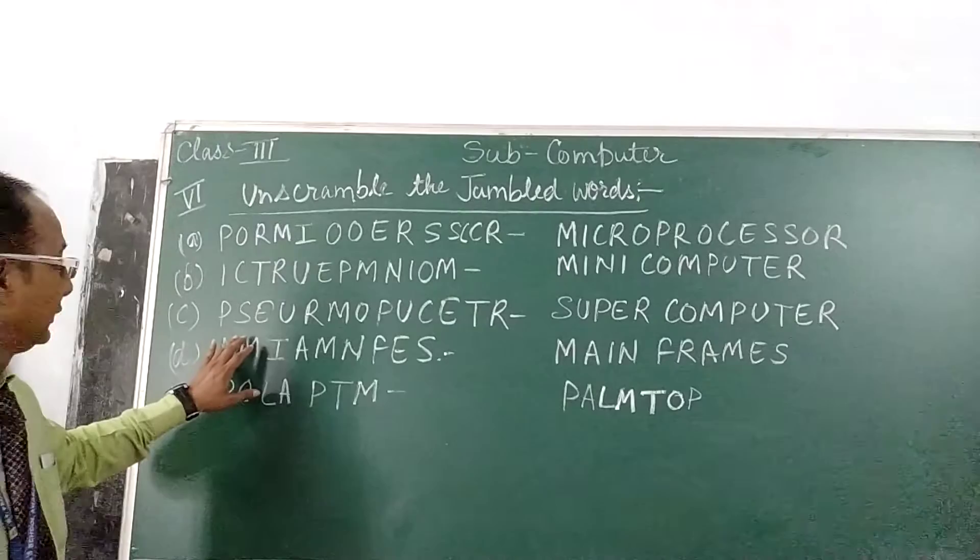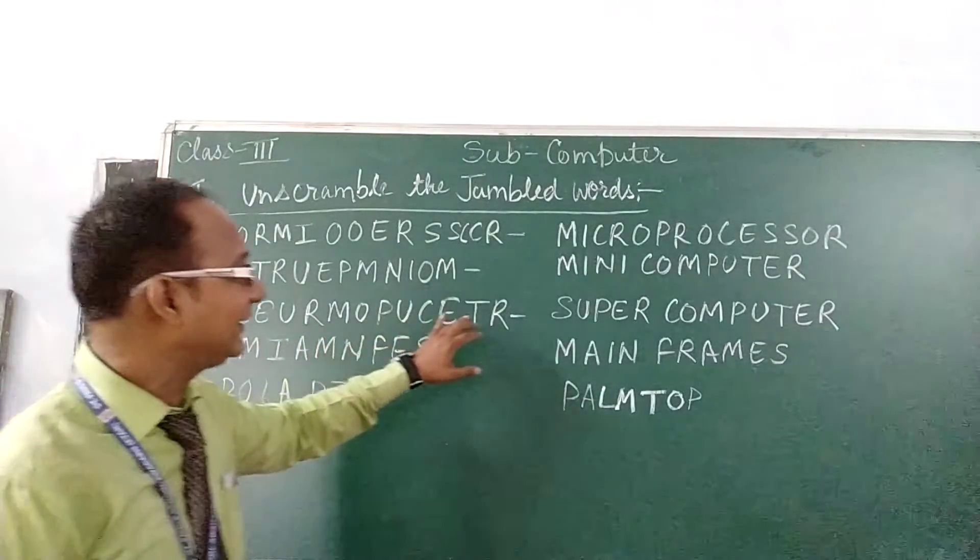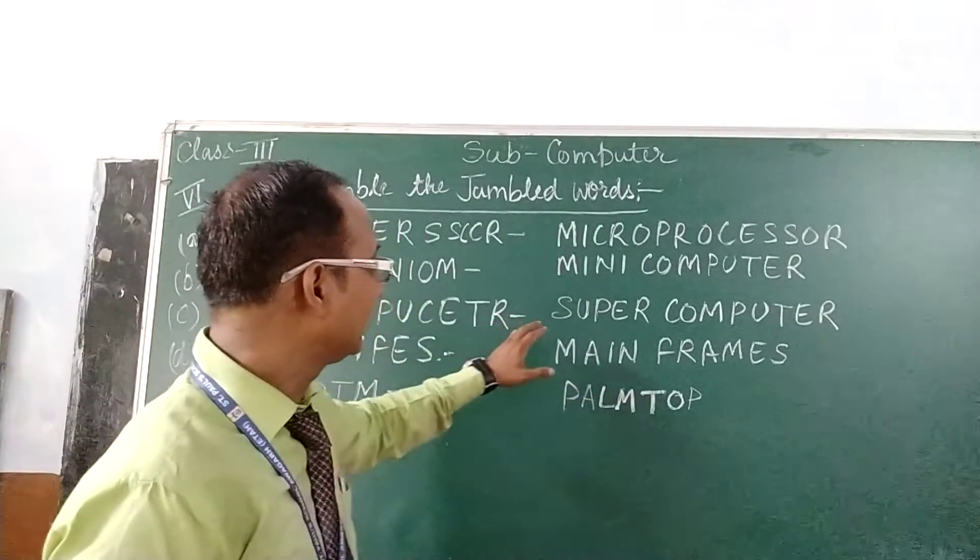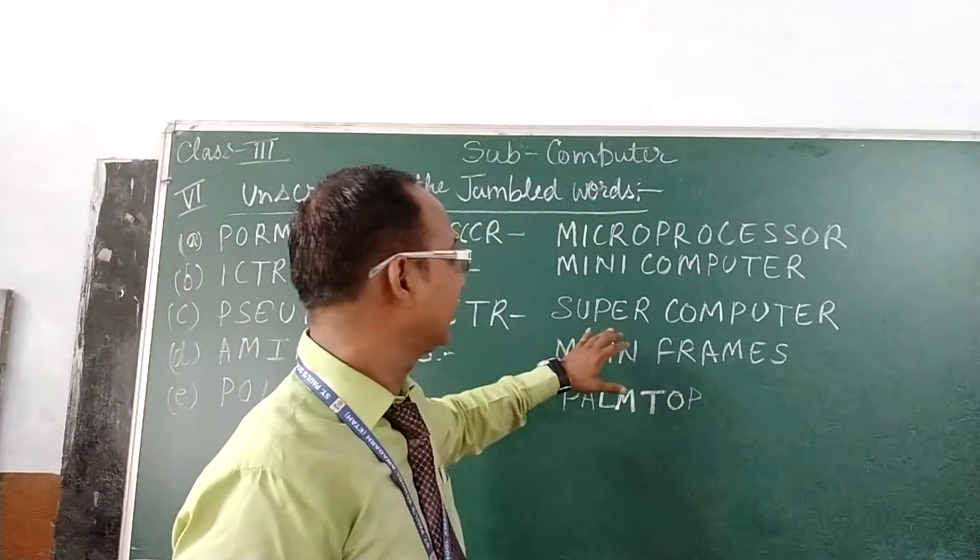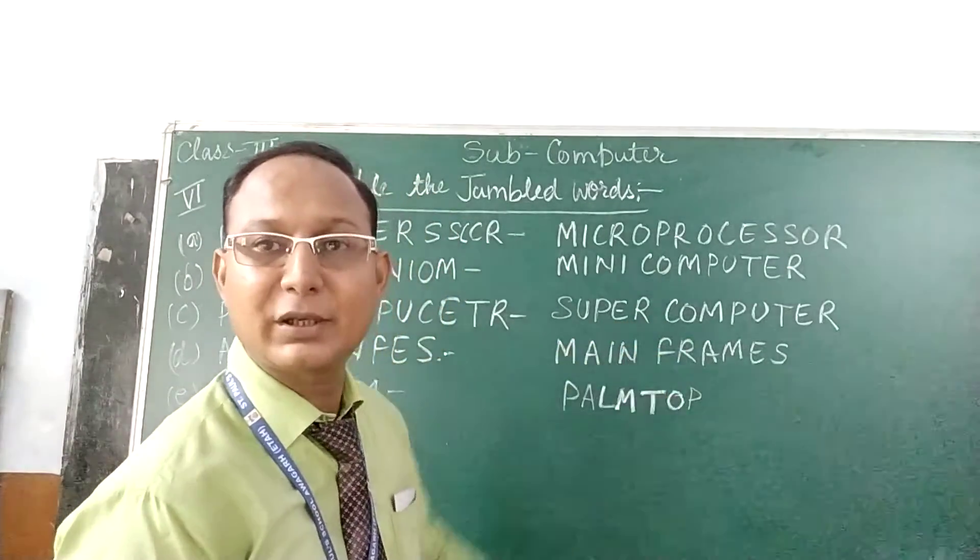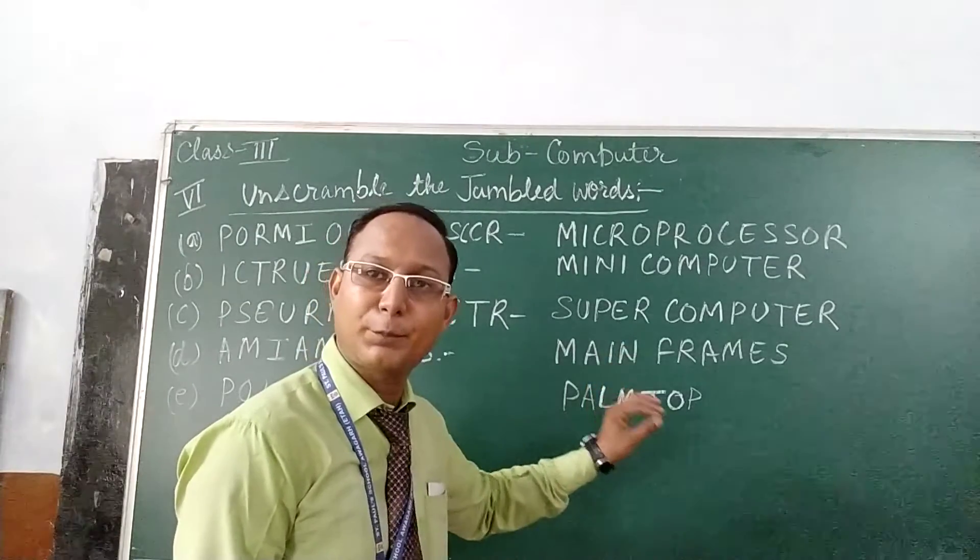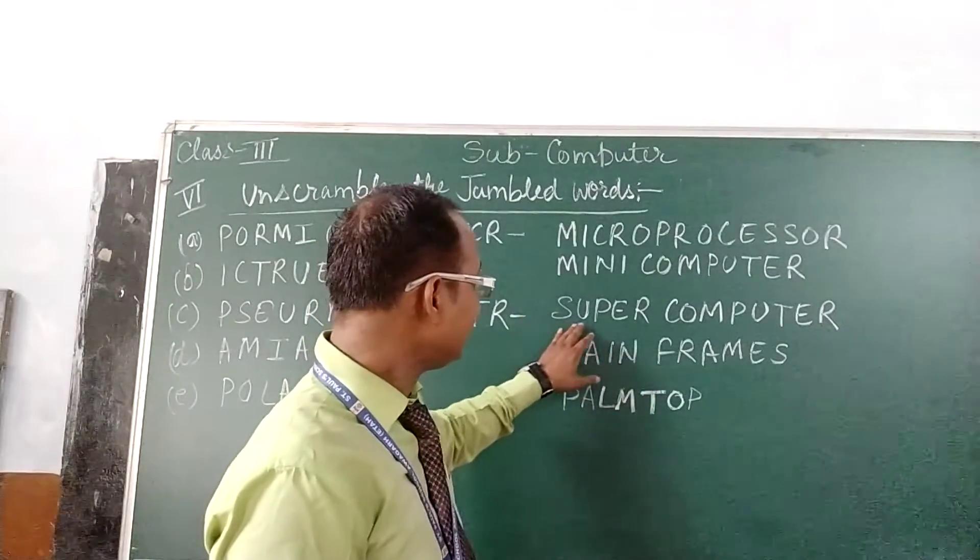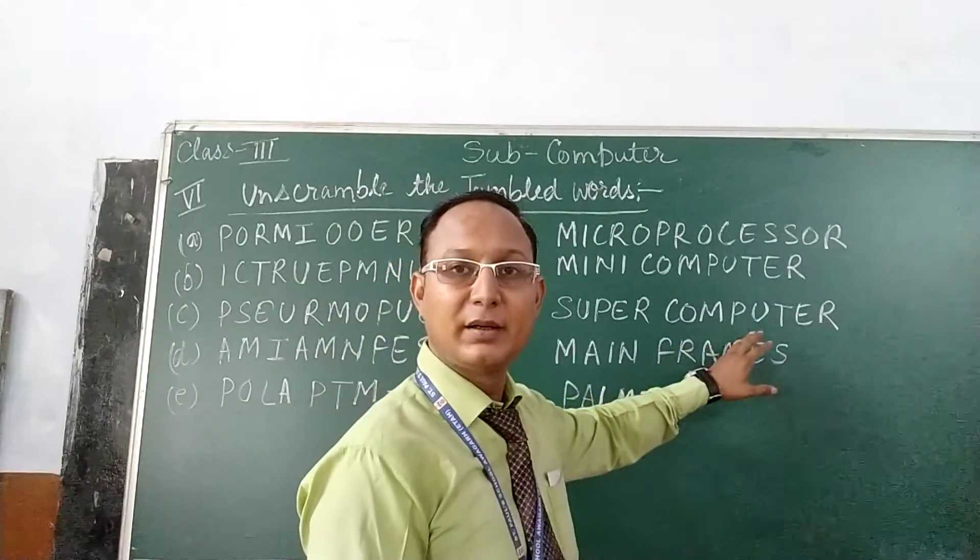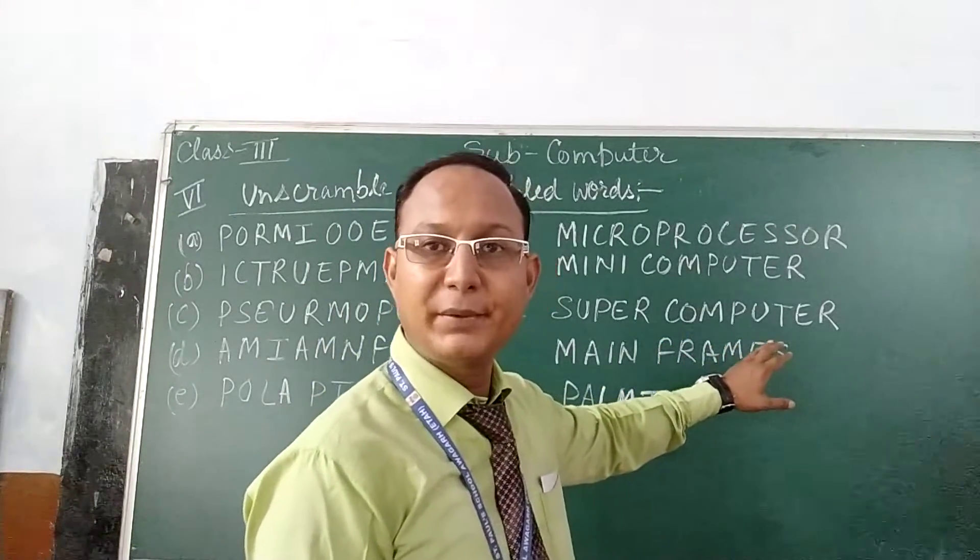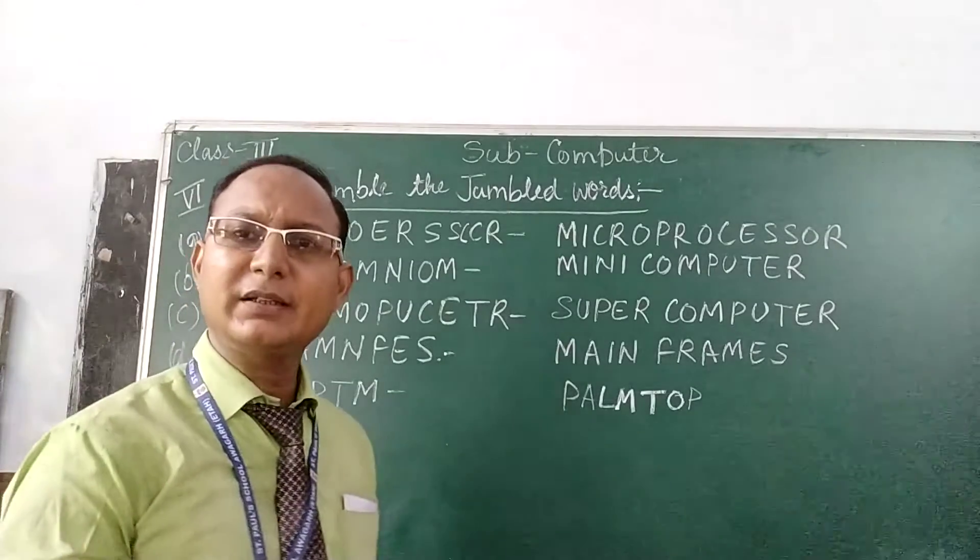Third word is P S E U R M O P U C E T R. Now the correct word after unarranging it will make super computer. The correct word is super computer. Note it down into your book. The spelling of super is S U P E R. And computer, C O M P U T E R.